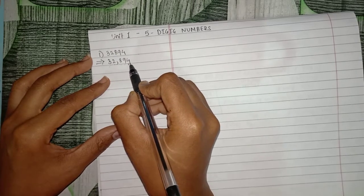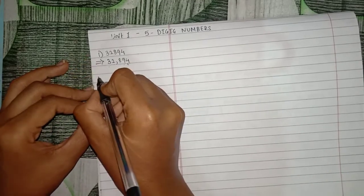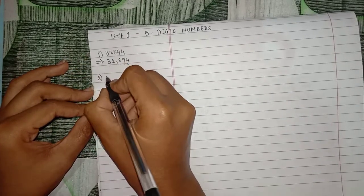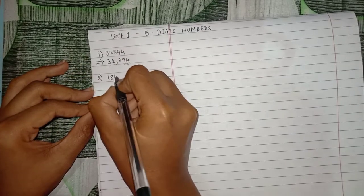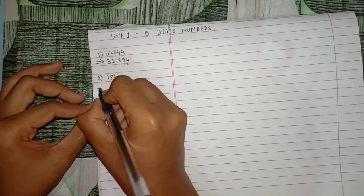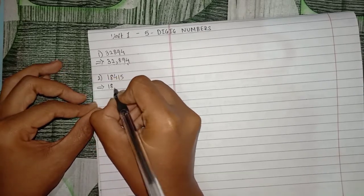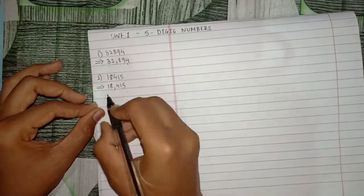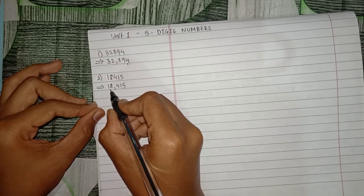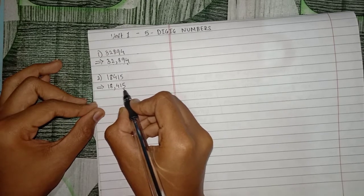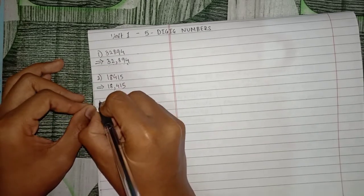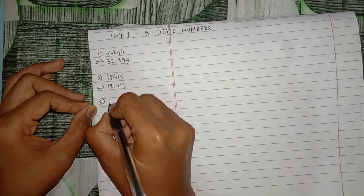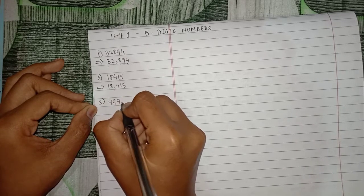Similarly, second one: 8415. In this we will put 18 comma 415. How we pronounce this: eighteen thousand, four hundred and fifteen.